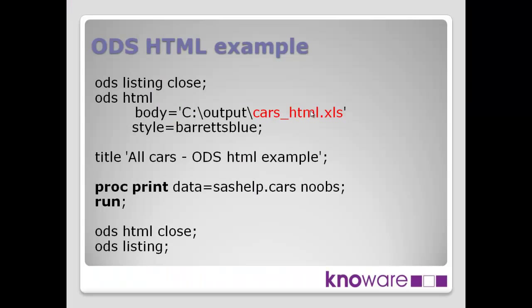Let's move on to the HTML example. Remember, we said we don't want to use HTML as a technique, but we'll show you what it creates for completeness. Similarly to the CSV example, we have ODS HTML statements. The file we're creating uses BODY equals, creating a file here. Even though it's an HTML file, we still call it .xls — that means Excel will know to open it and will display it appropriately. Because it's HTML, we can start to use styles. I've used STYLE equals Barrets Blue, one of the standard styles with SAS. There's a whole range of dozens of different styles that come automatically with SAS, and you can create your own corporate styles with your company's logo and appropriate colours.